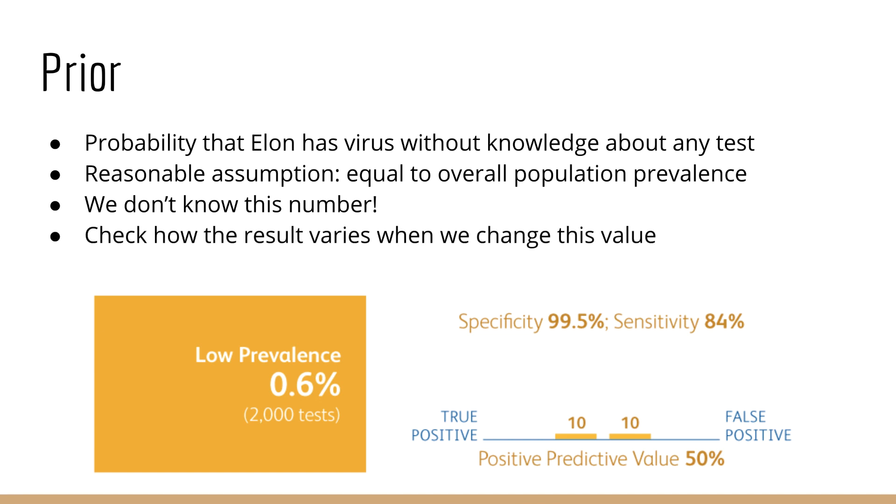For the purpose of this discussion, we'll assume low prevalence, which on the test information page is listed as 0.6%. Okay, so p of x equals 1 is equal to 0.6%.